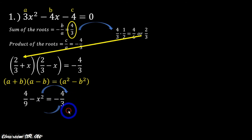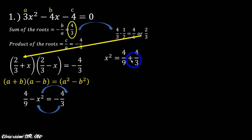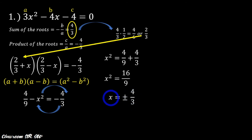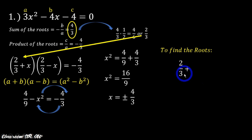Transposing x squared to the other side and negative 4 over 3 to the other side, we get x squared equals 4 over 9 plus 4 over 3. The LCD is 9, so 4 plus 12 gives 16 over 9. Taking the square root of both sides, x equals positive or negative 4 over 3. So our roots are 2/3 plus 4/3 equals 2, and 2/3 minus 4/3 equals negative 2 thirds.